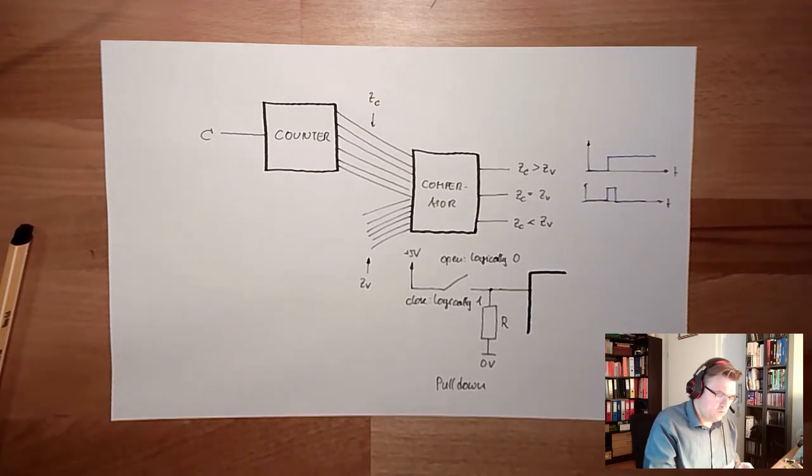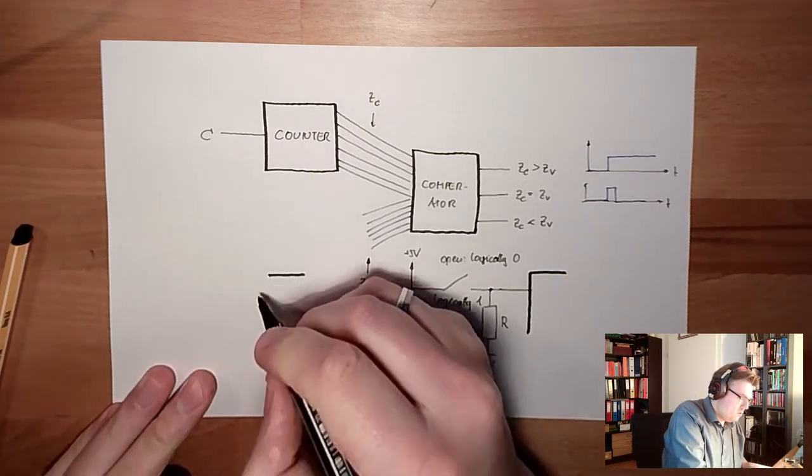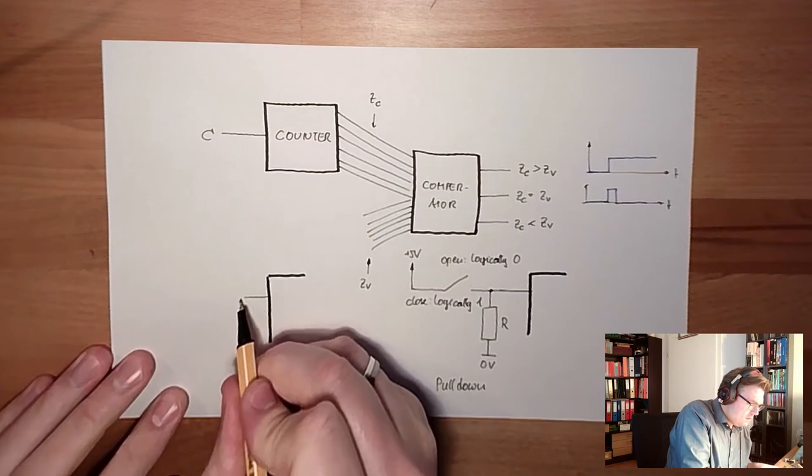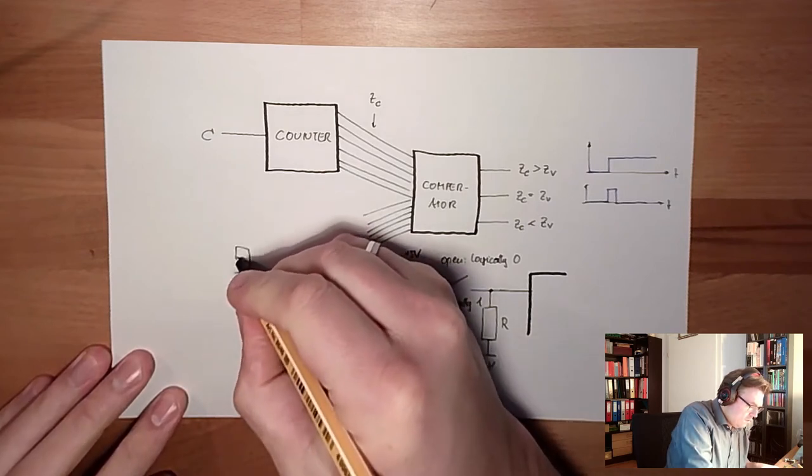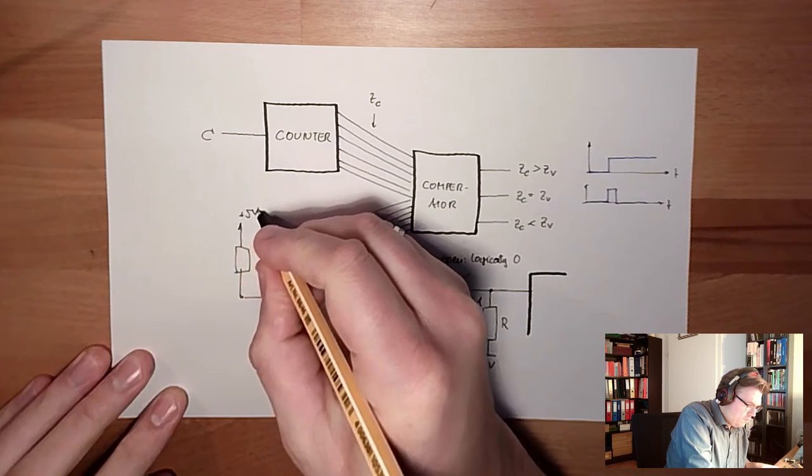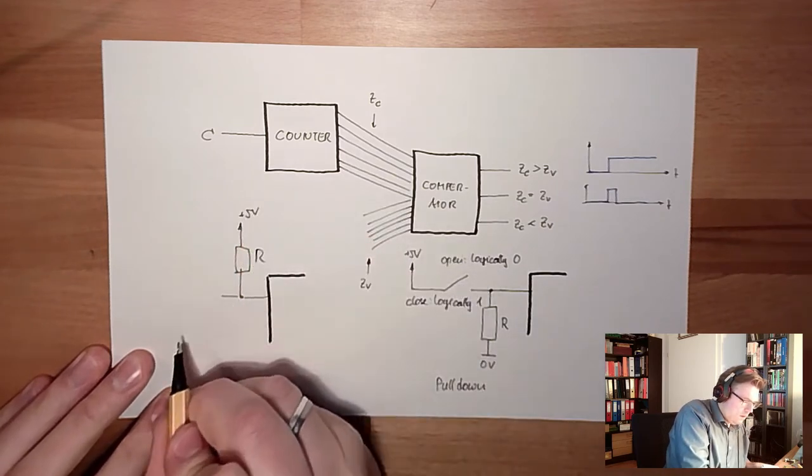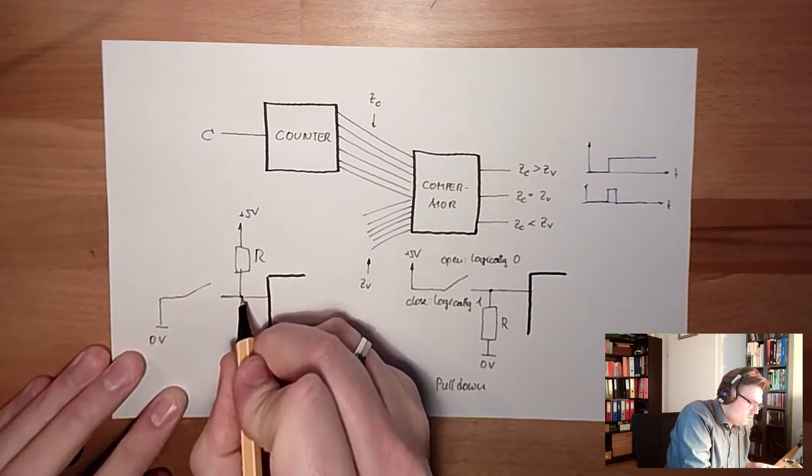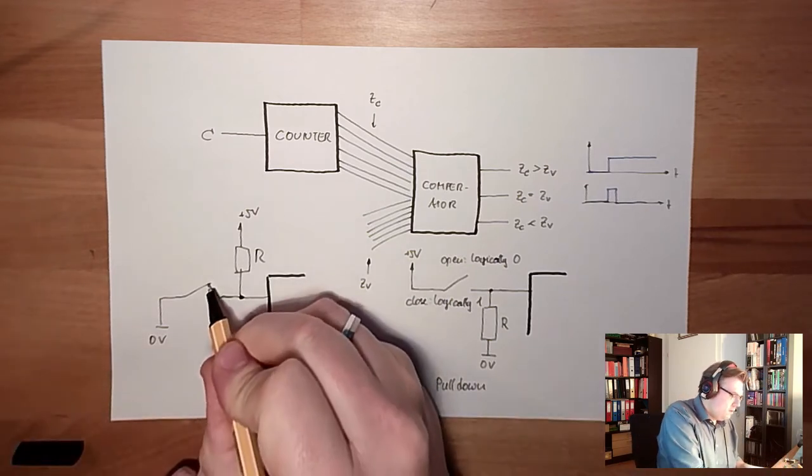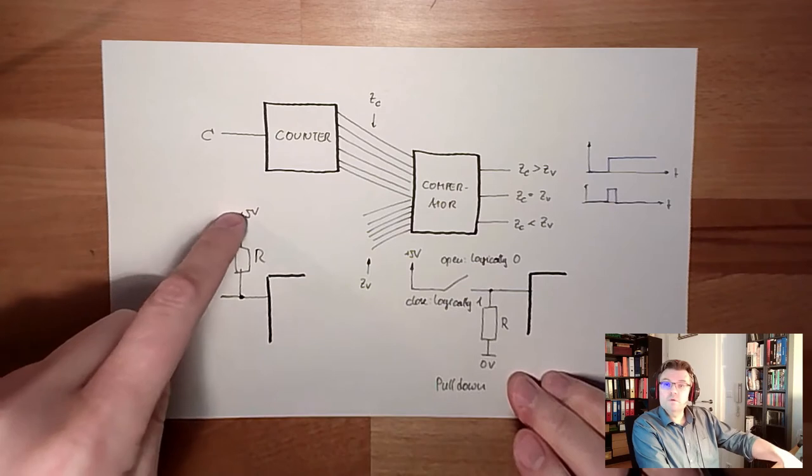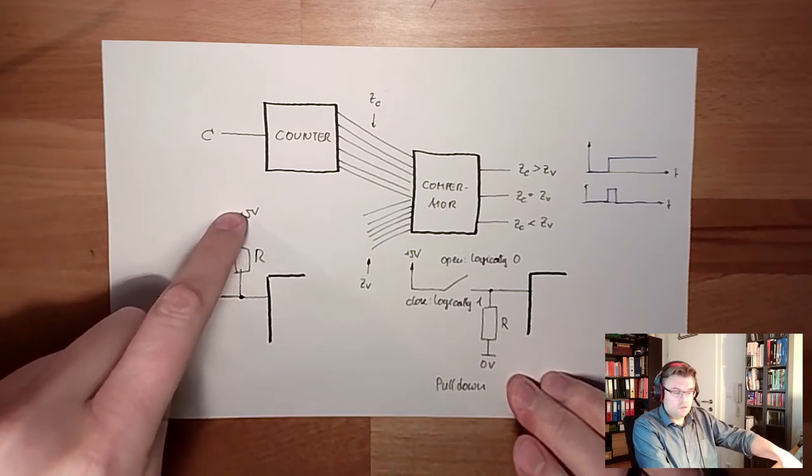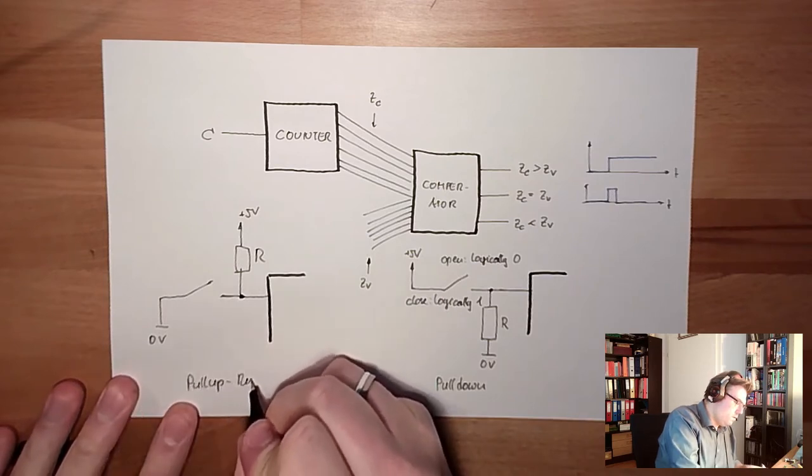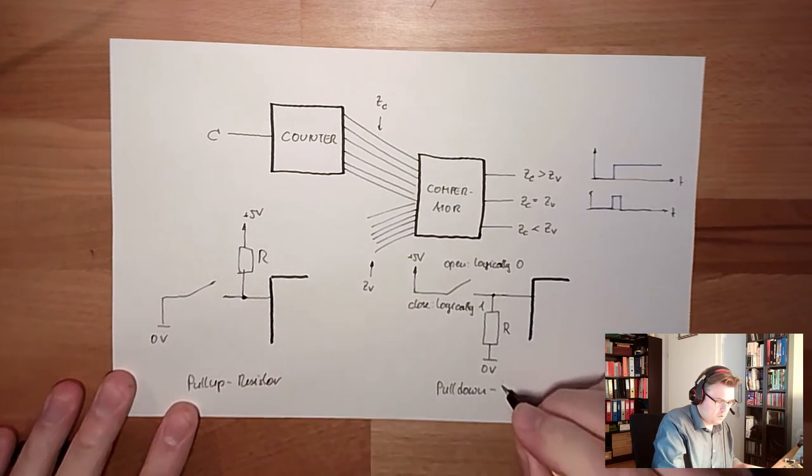You might use a different approach. You might use a resistor which is connected to plus 5V. And then here is a switch, and this is connected to 0V. If it's open, the resistor is pulling this line up to 5V. So this is a so-called pull up resistor.